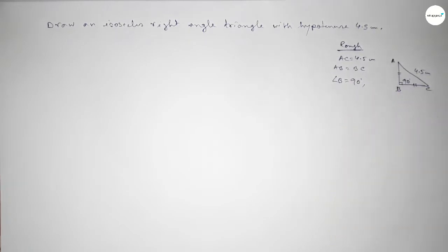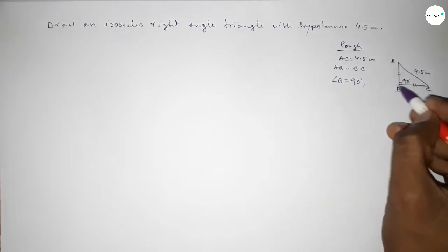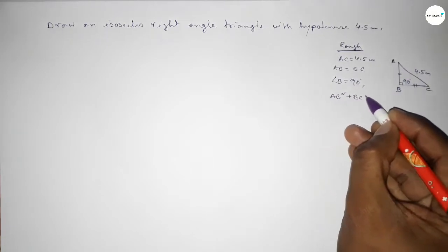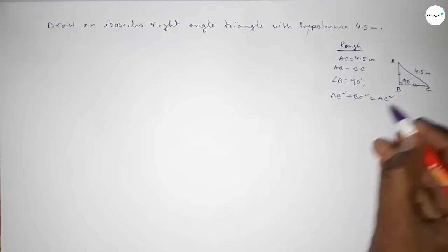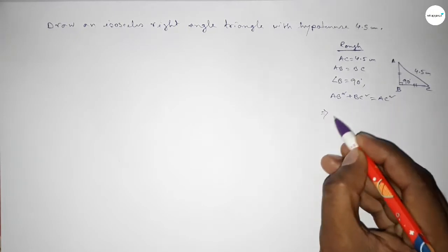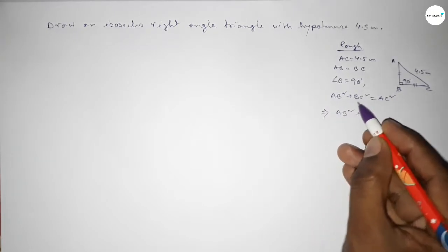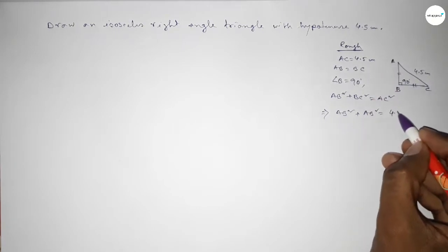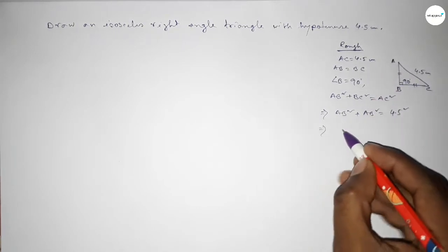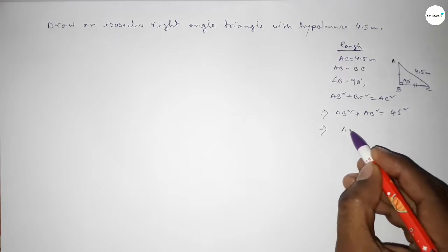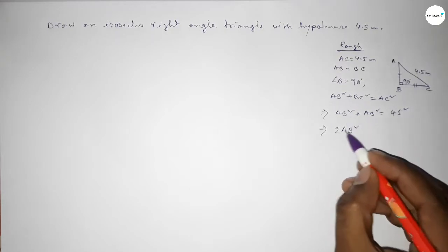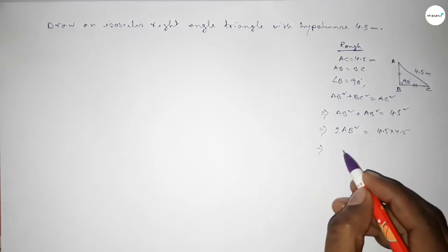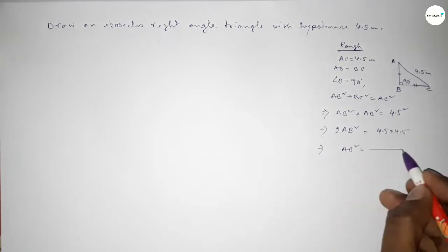By Pythagoras theorem: AB squared plus BC squared equals AC squared — height squared plus base squared equals hypotenuse squared. Since AB equals BC, this implies AB squared plus AB squared equals 4.5 squared, so 2AB squared equals 4.5 times 4.5.